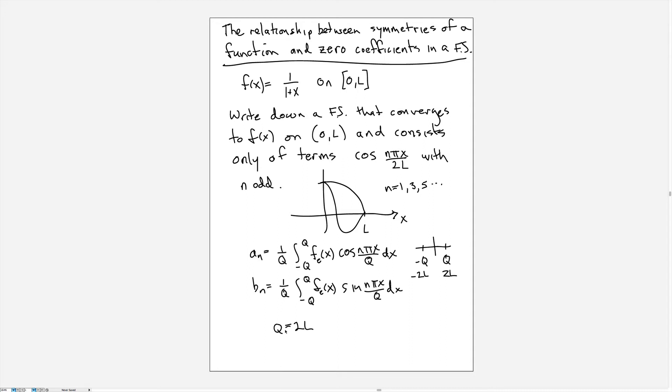Our goal is to represent the function with the Fourier series in terms of functions of the form cosine n pi x over 2L. How do we ensure by making these extensions that the b_n coefficients will be 0 and the a sub even n coefficients will also be 0? Let's talk about the b_n first. The trick is to extend the function f beyond 0 to L in such a way as to force the integrals to become 0.